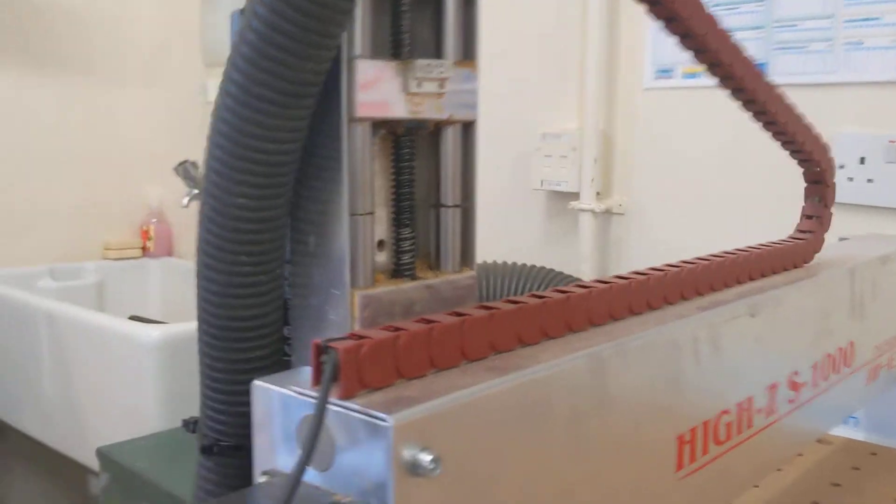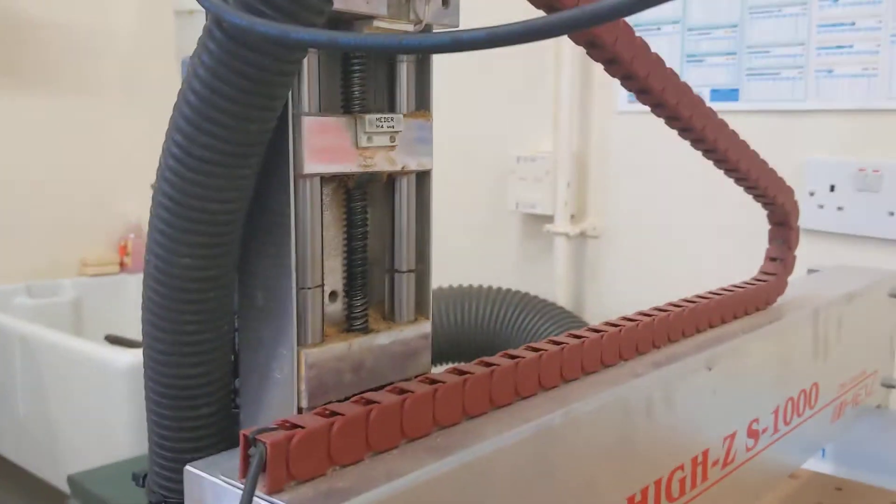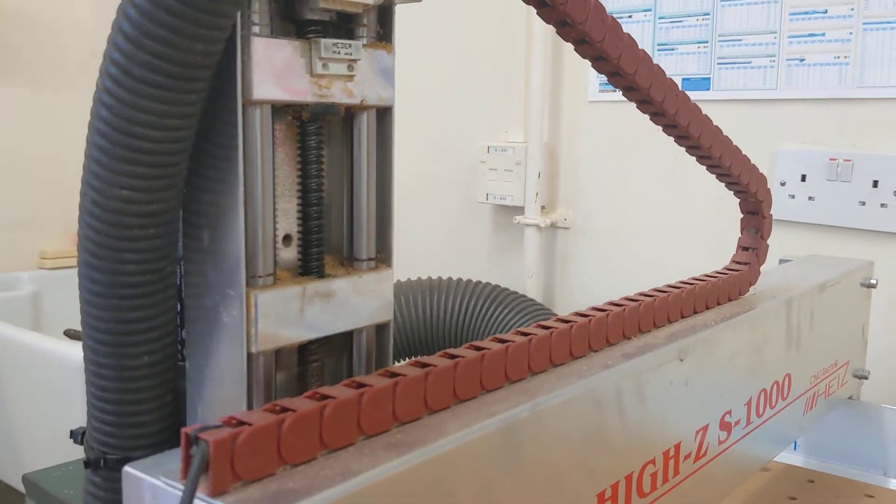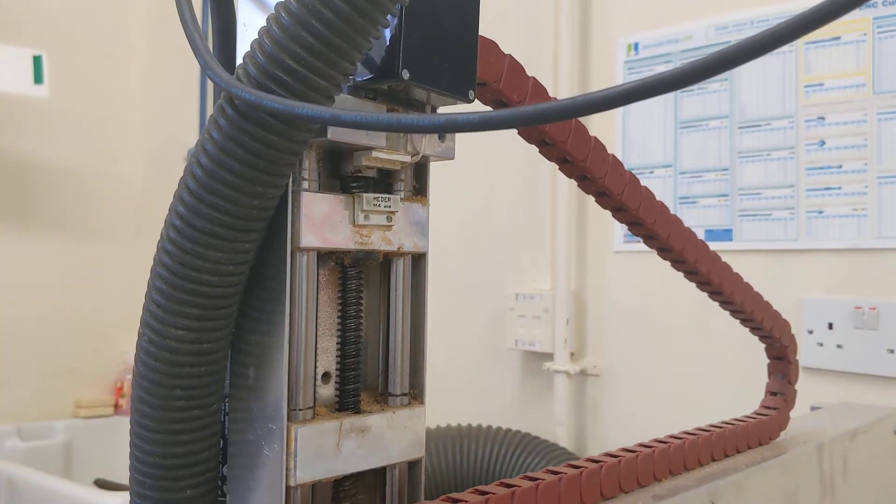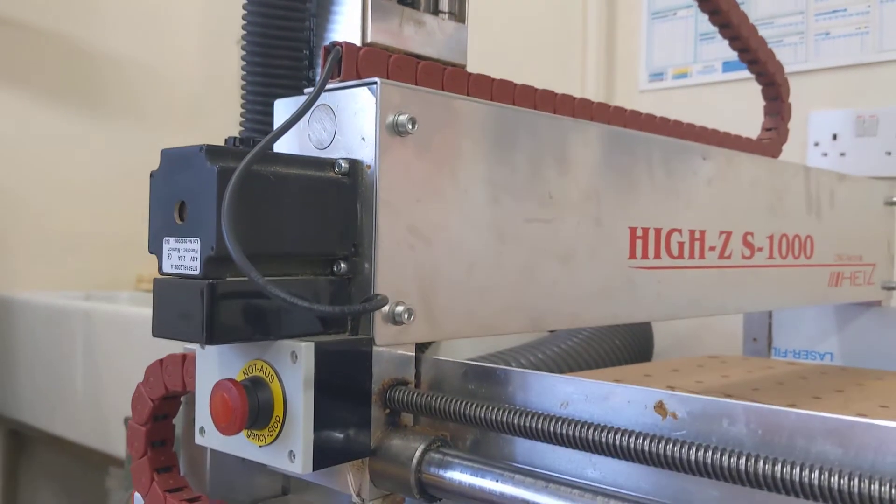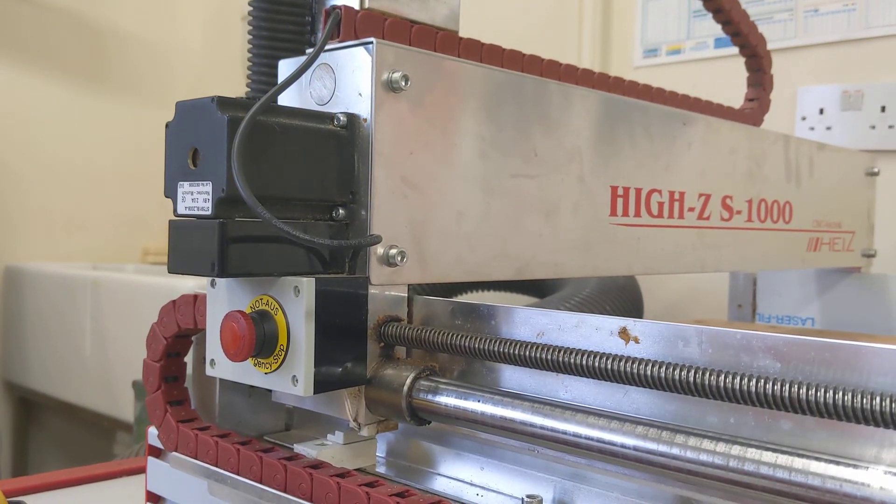There's another proximity sensor on the y-axis gantry and another one you can see on the z-axis right on the top there. So it knows its position based on the sensor readings from those proximity sensors. Very useful indeed.